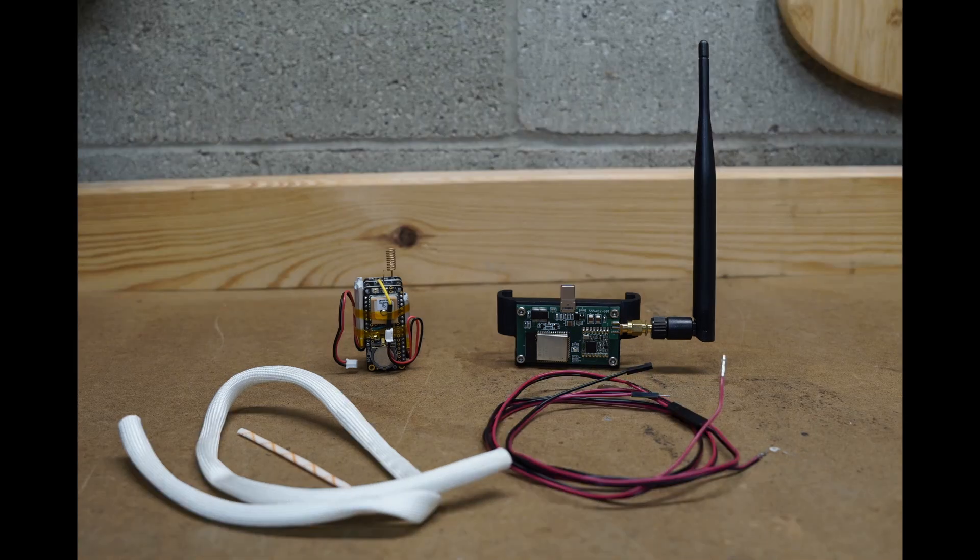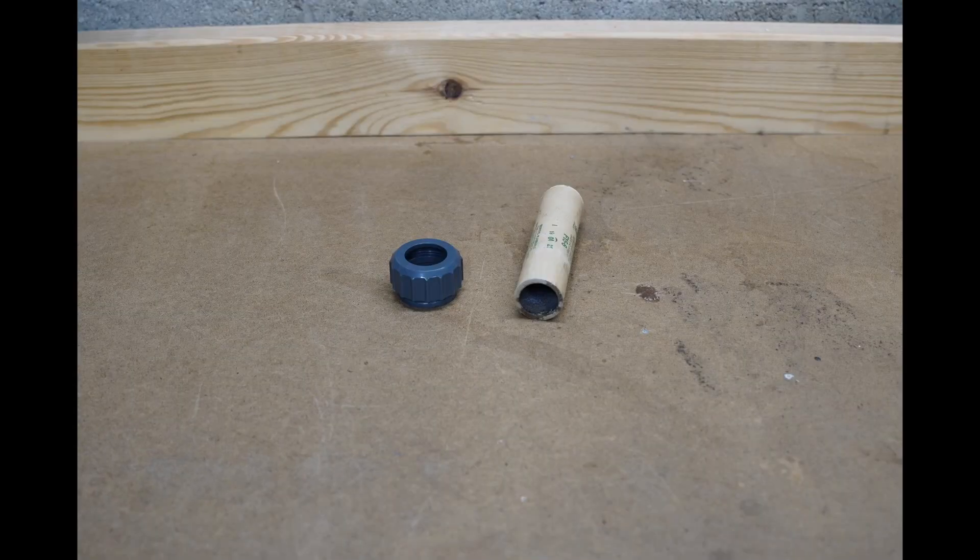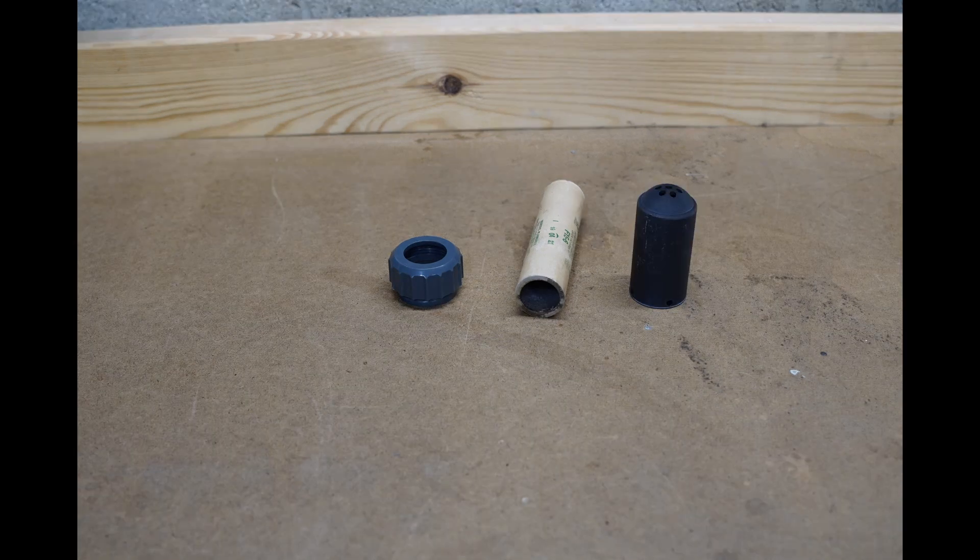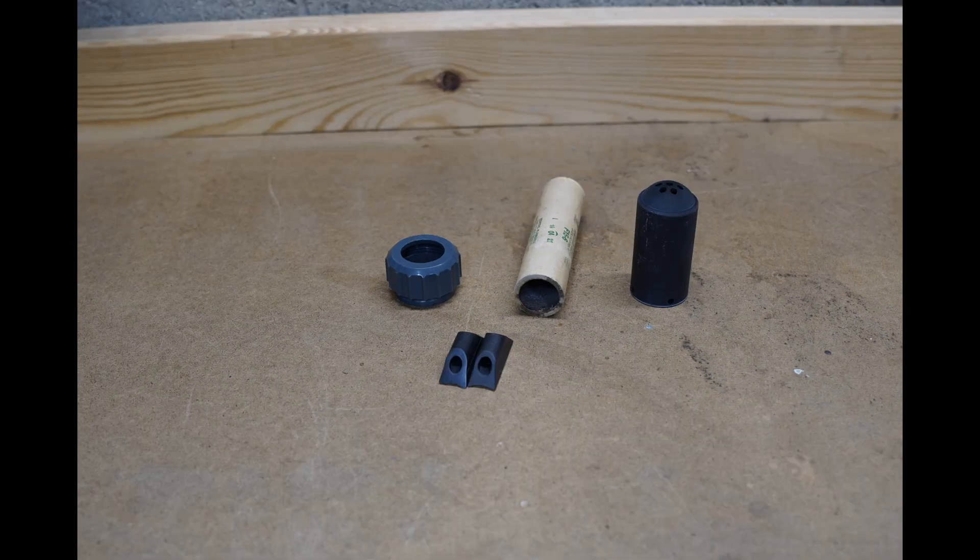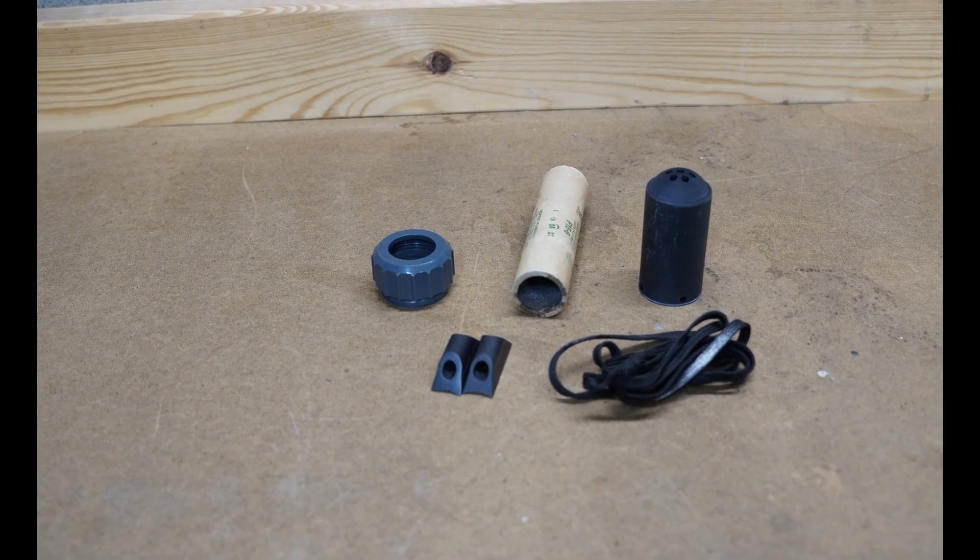Some extra things we're going to need are a 29 millimeter motor retainer, used 29 millimeter motor, an ejection charge baffle 3D printed, 3D printed rail guides, and a nylon shock cord. Links for all this stuff will be in the description.